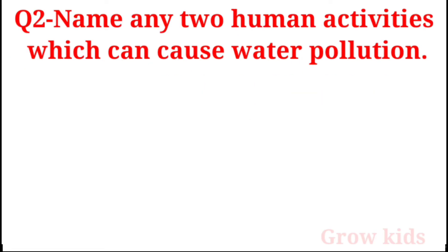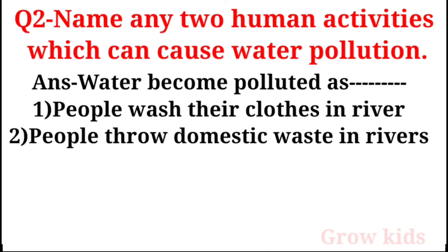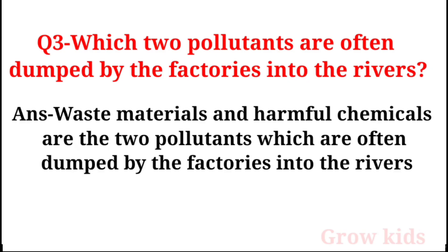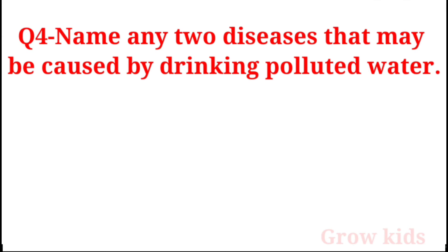Question 2: Name any two human activities which can cause water pollution. Answer: First, people wash their clothes in rivers. Second, people throw domestic waste in rivers. Question 3: Which pollutants are often dumped by factories into the rivers? Answer: Waste materials and harmful chemicals are the two pollutants often dumped by factories into rivers.